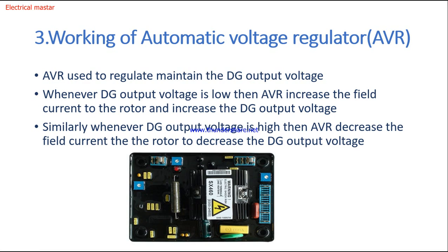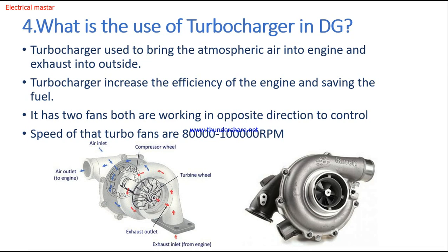Third question: how does the AVR — automatic voltage regulator — work? The AVR is used to regulate and maintain the DG output voltage at the rated value. Whenever the DG output voltage is low, the AVR increases the field current through the rotor to increase the output voltage. Similarly, when the output voltage is high, the AVR decreases the field current. If you want more detail about the AVR, click the info button — I have a separate video explaining how the AVR works and how to connect it with the diesel generator.